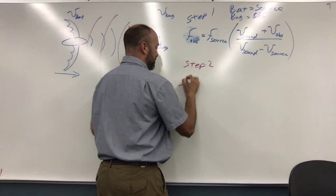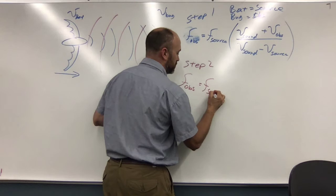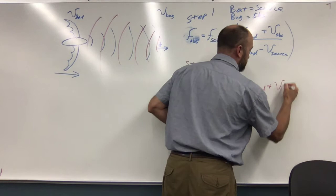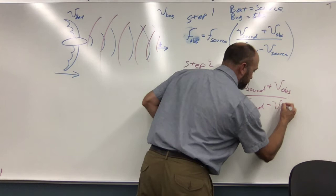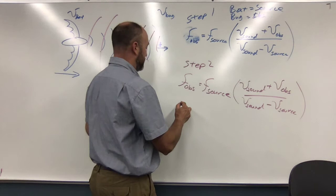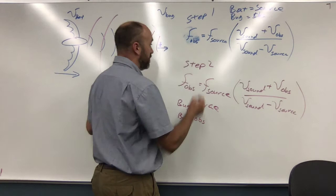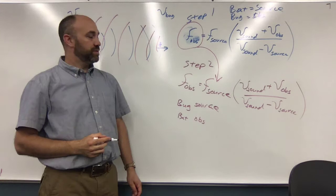Use the same equation. Frequency of the observer equals frequency of the source. We're going to write speed of sound plus speed of the observer divided by speed of sound minus speed of the source. But in this case, the bug is the source and the bat is the observer.